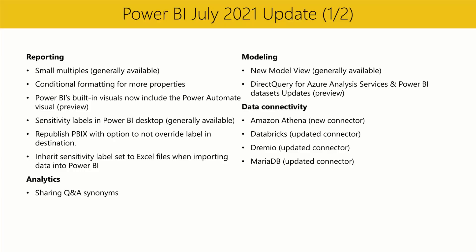Sensitivity labels in Power BI Desktop are now generally available. With Microsoft Information Protection Sensitivity Labels, creators can easily label and protect sensitive content all within the desktop app. With this release, creators will be able to republish PBIX files without overriding sensitivity labels on destination datasets or reports. This is useful for cases where the sensitivity label applied on the PBIX file doesn't match the sensitivity of the data of the target in the service.